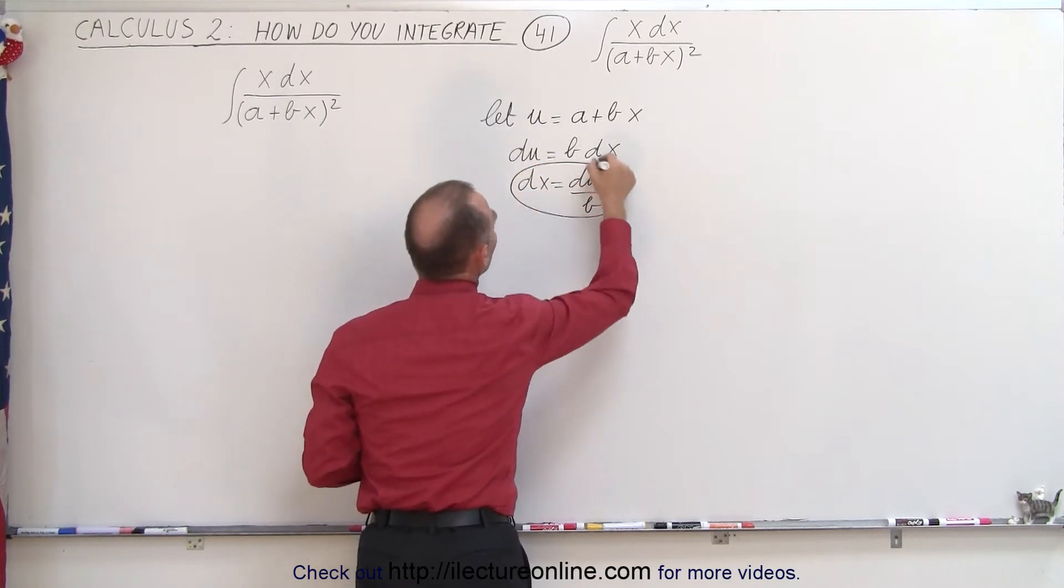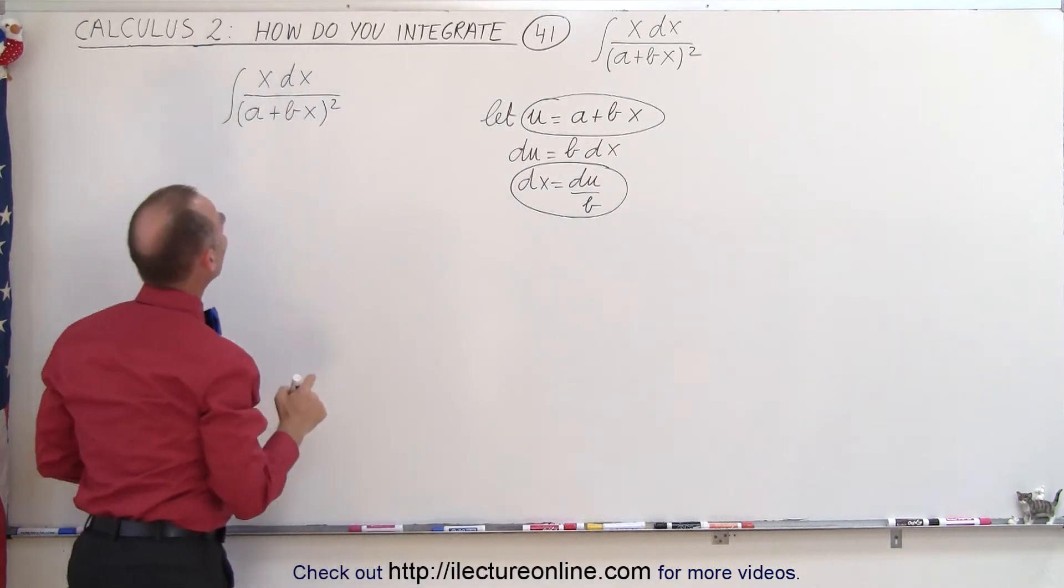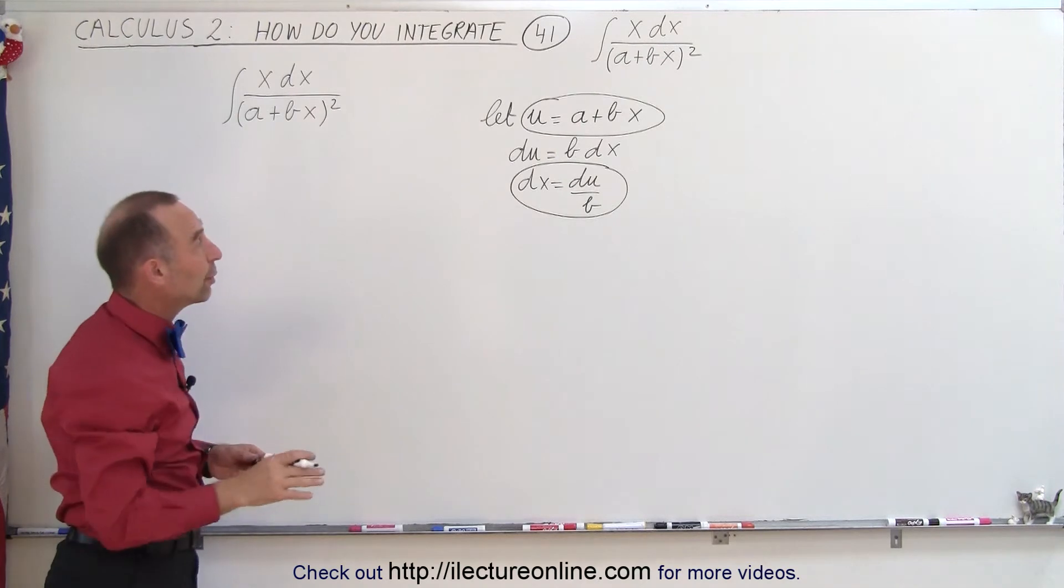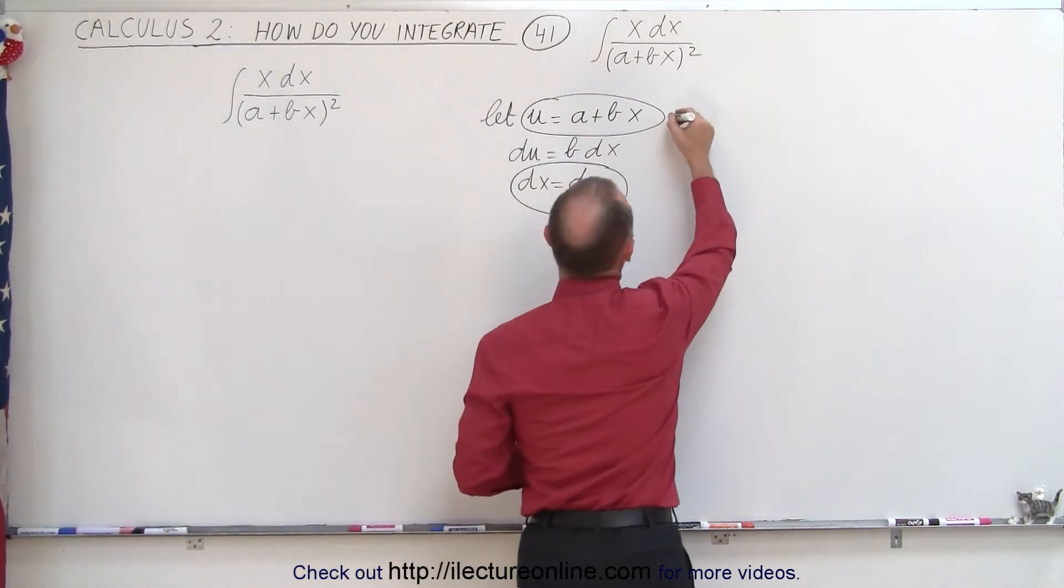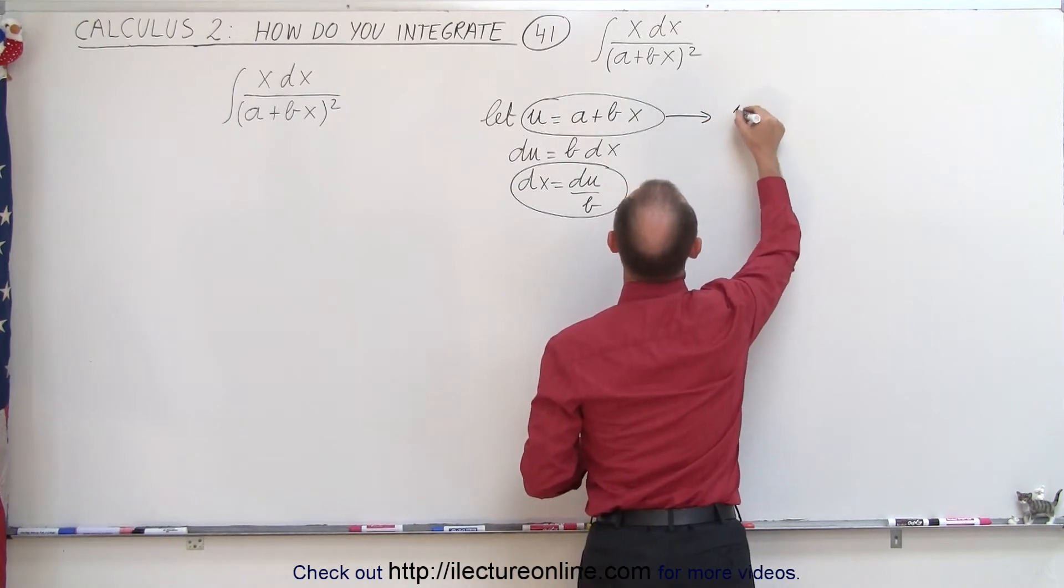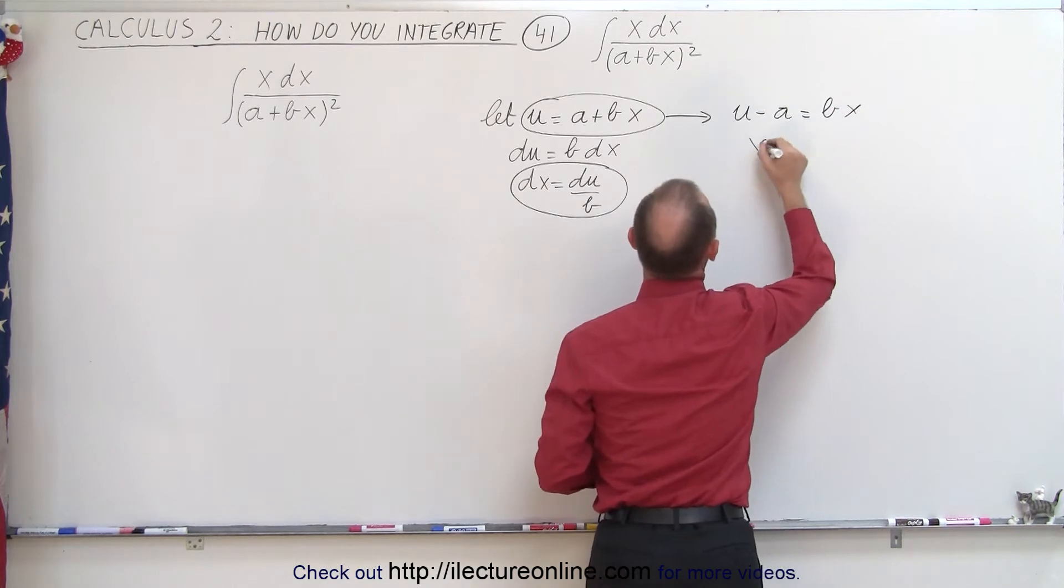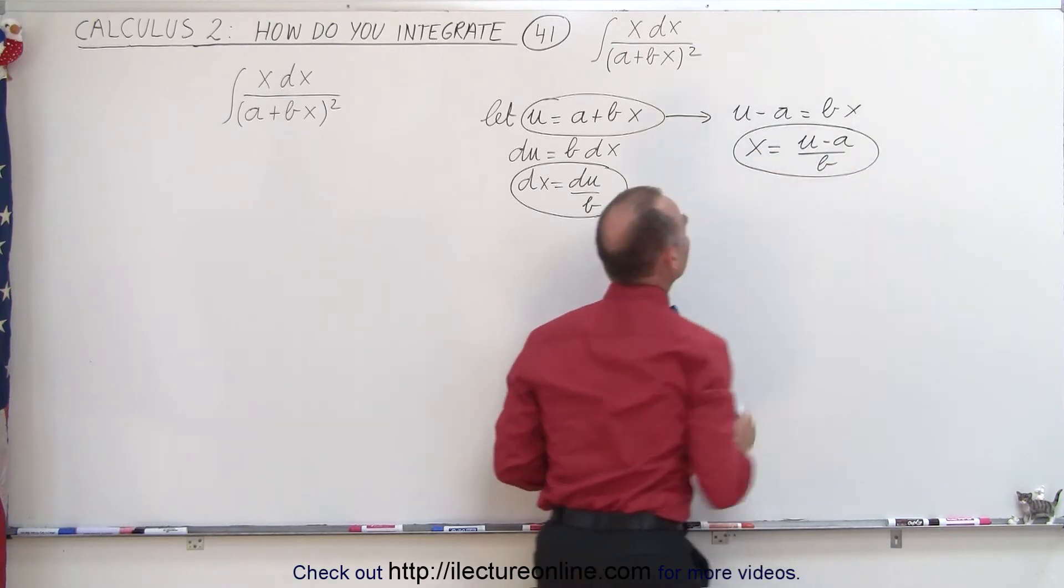So we're going to substitute this and this in the integral. But now also notice we still have an x in the numerator just like in the previous video. We're going to also have to replace it with some relationship to u. So we're going to take this equation and say that u minus a is equal to b times x, or x is equal to u minus a divided by b and also substitute this into the integral.